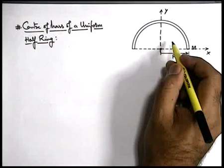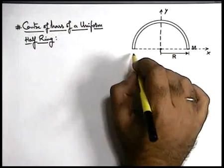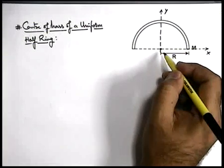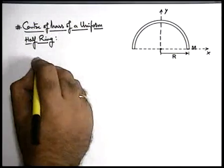Now in this situation, as being a continuous object, we go by the method of continuous object system center of mass localization. So here we can say.